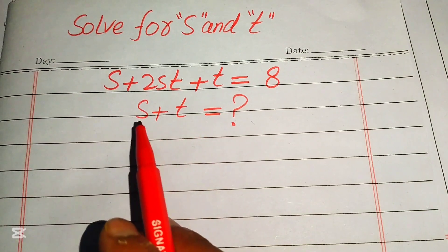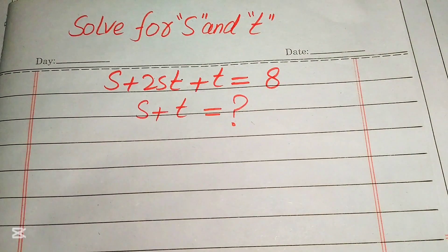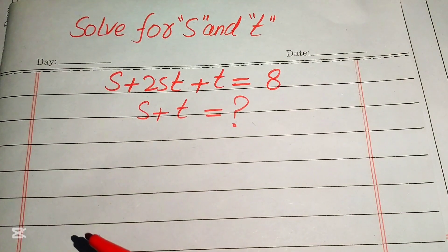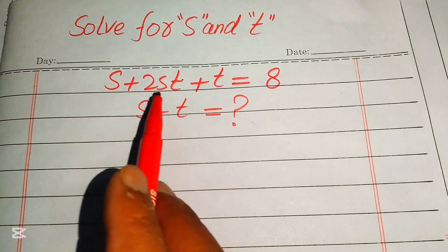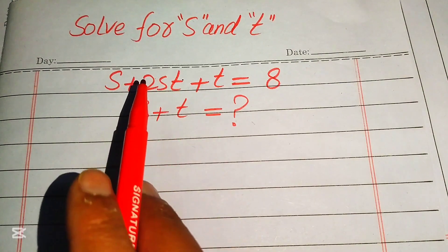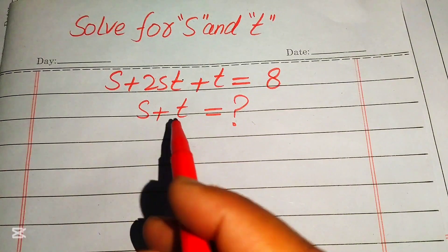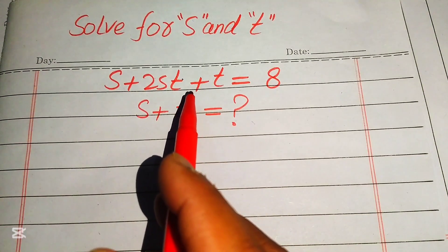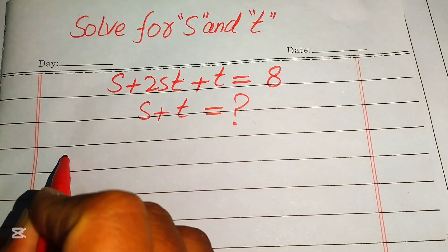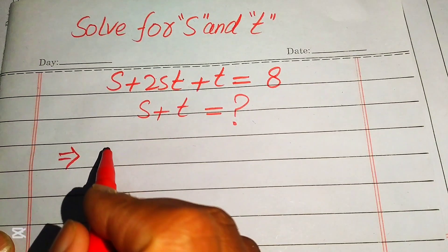In order to find the value of s plus t, we first need to find the individual values of s and t. The very first step is to focus on this equation and find its factors. To factorize, we will multiply both sides by 2.